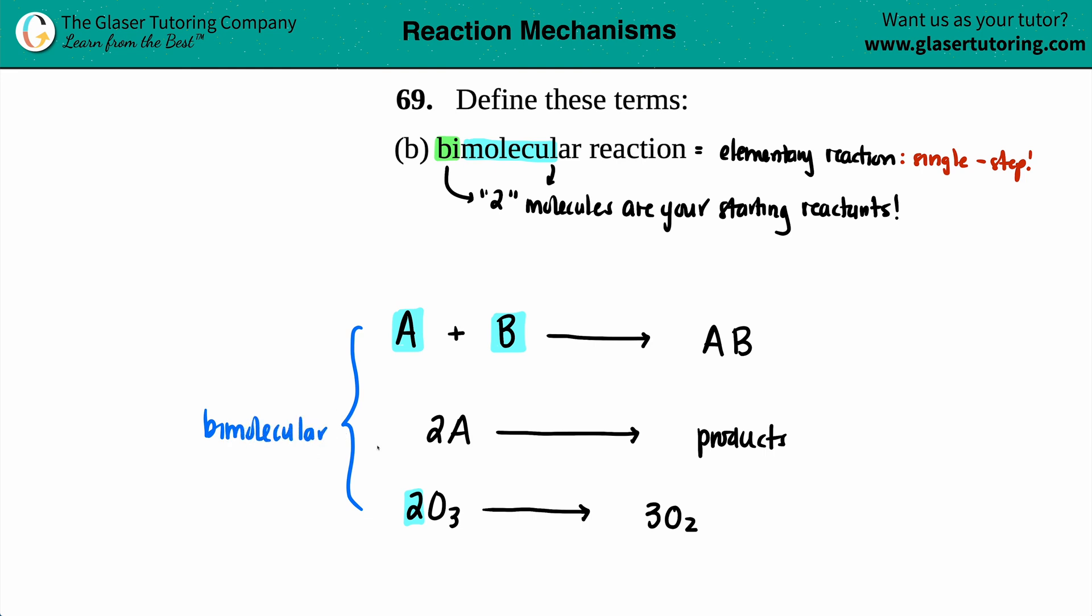We're saying that they're elementary steps as well because what you see is what you get. It's only one single step. That's basically it. A bimolecular reaction is an elementary reaction that has two molecules as your starting reactants, or two substances as your starting reactants.